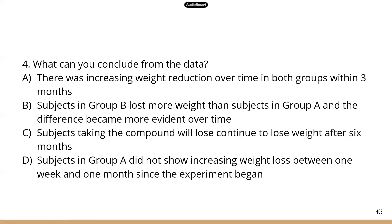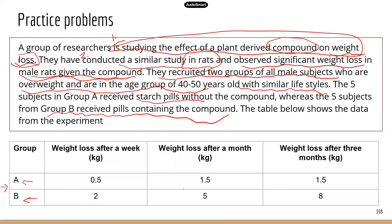Number four, what can you conclude from the data? So now let's look at the different statements. Statement A, there was increasing weight reduction over time in both groups within three months. That's not true. We saw increasing weight reduction over time for group B only. Remember for group A, after one month, after three months, it's the same number, same amount of weight loss. Statement B, subjects in group B lost more weight than subjects in group A, and the difference became more evident over time, correct? If you go back to the data, you see this is 2 versus 0.5, and this is 5 versus 1.5. So the difference is growing. And even here, 8 versus 1.5. So again, after three months, the difference was the greatest.